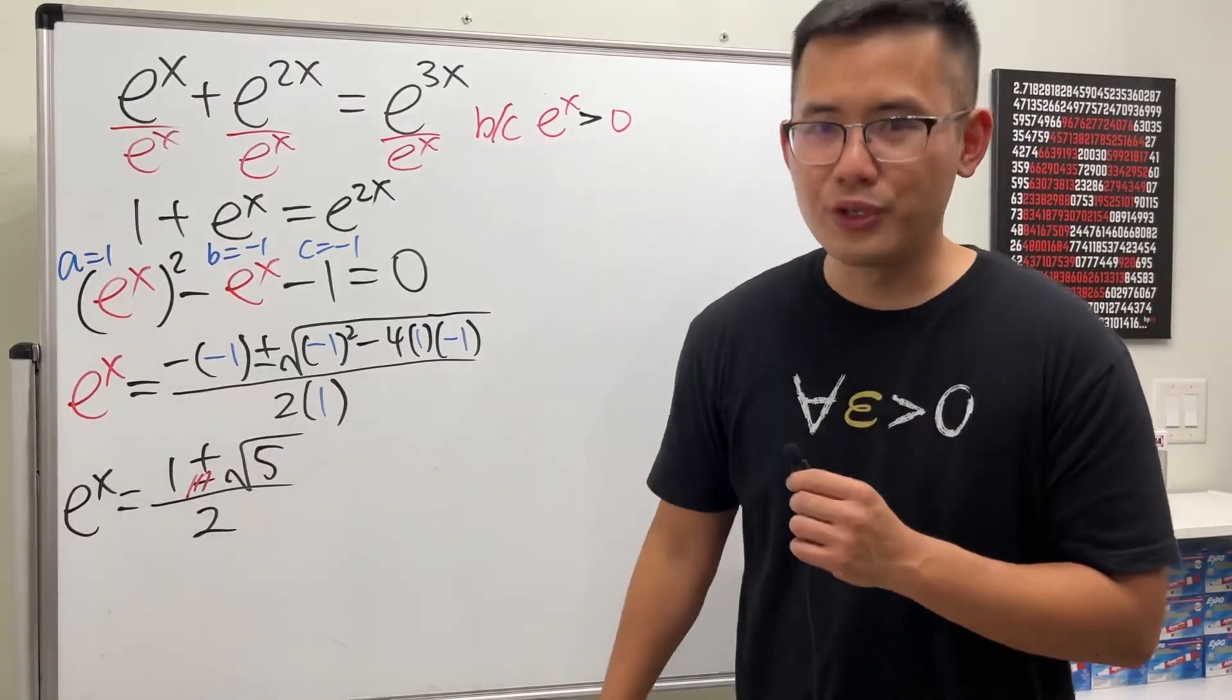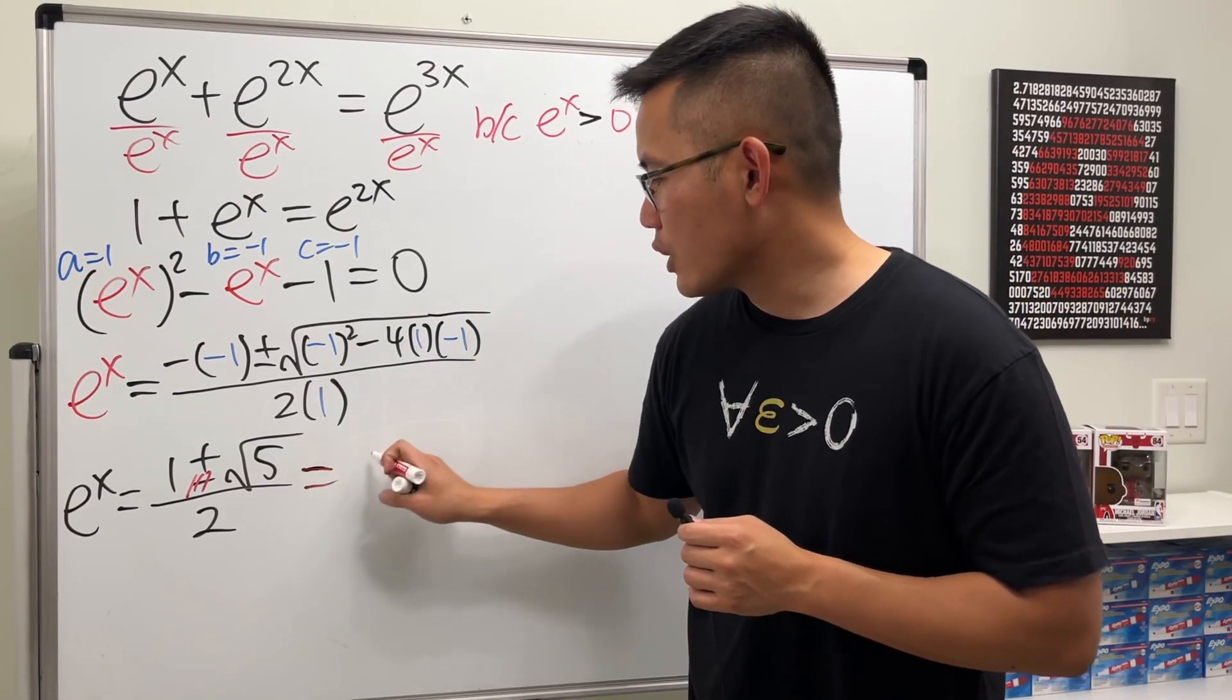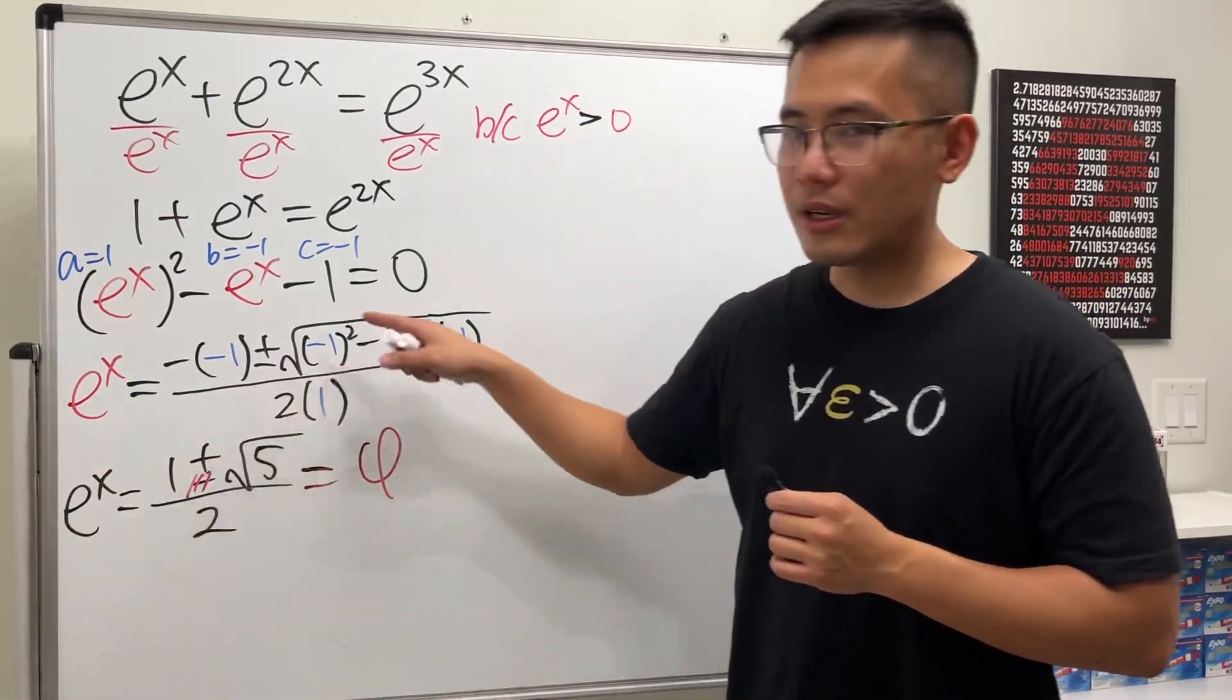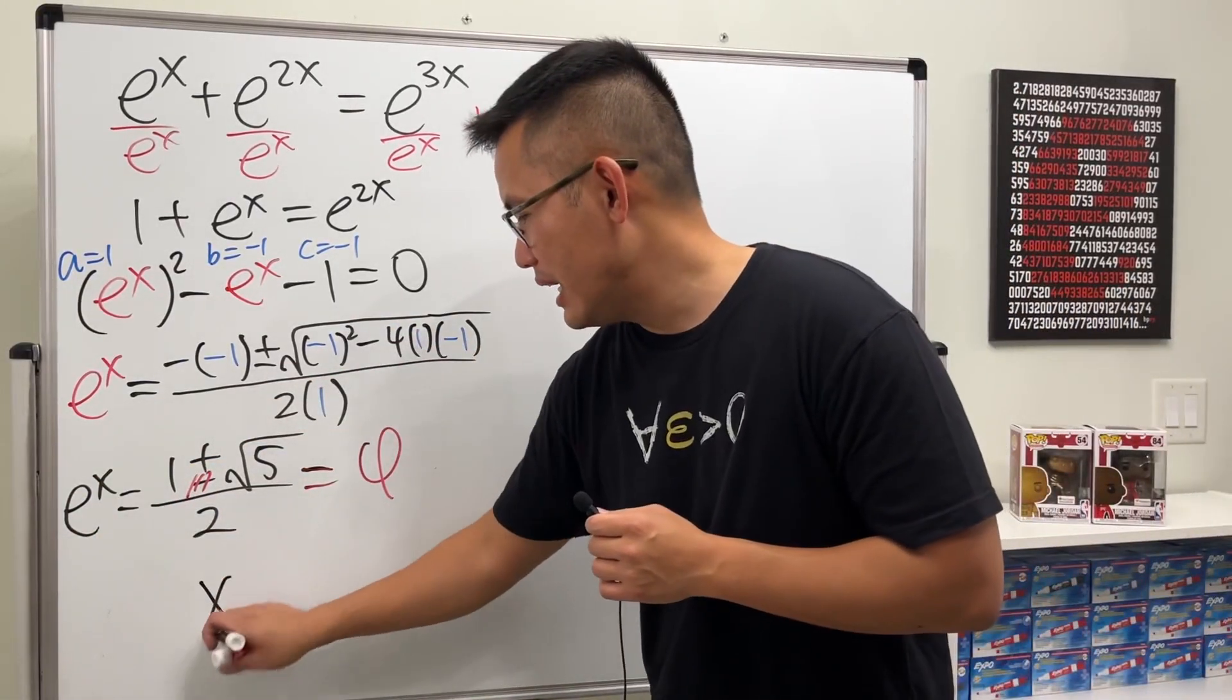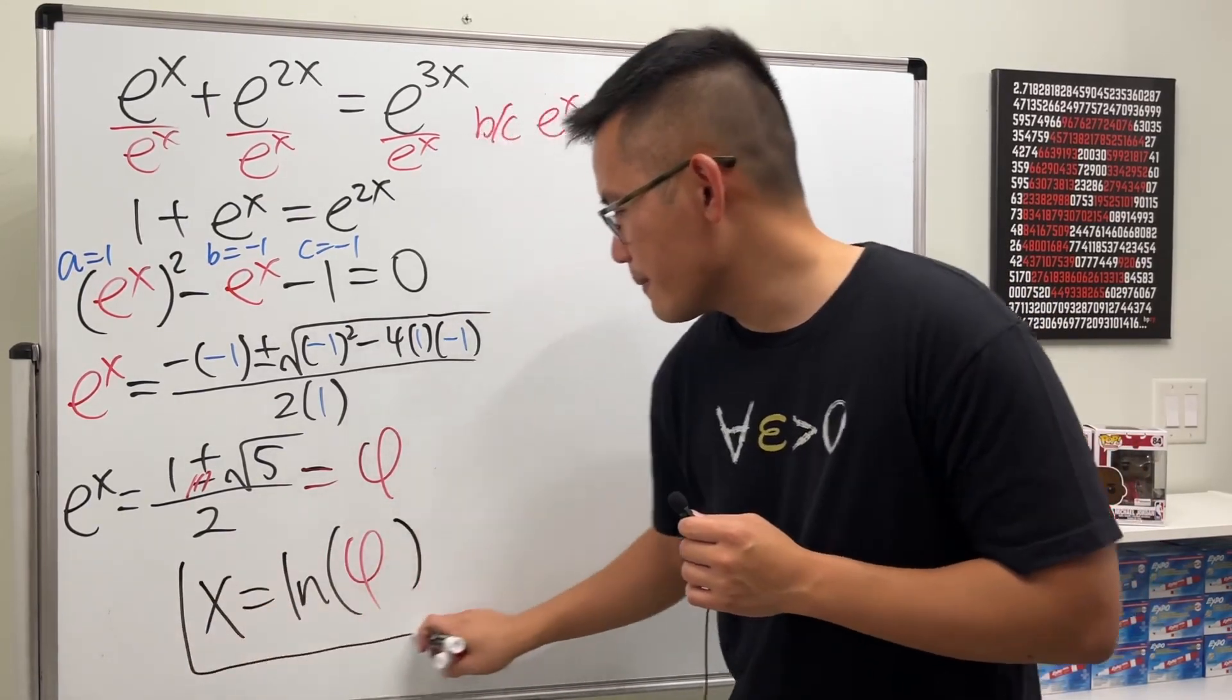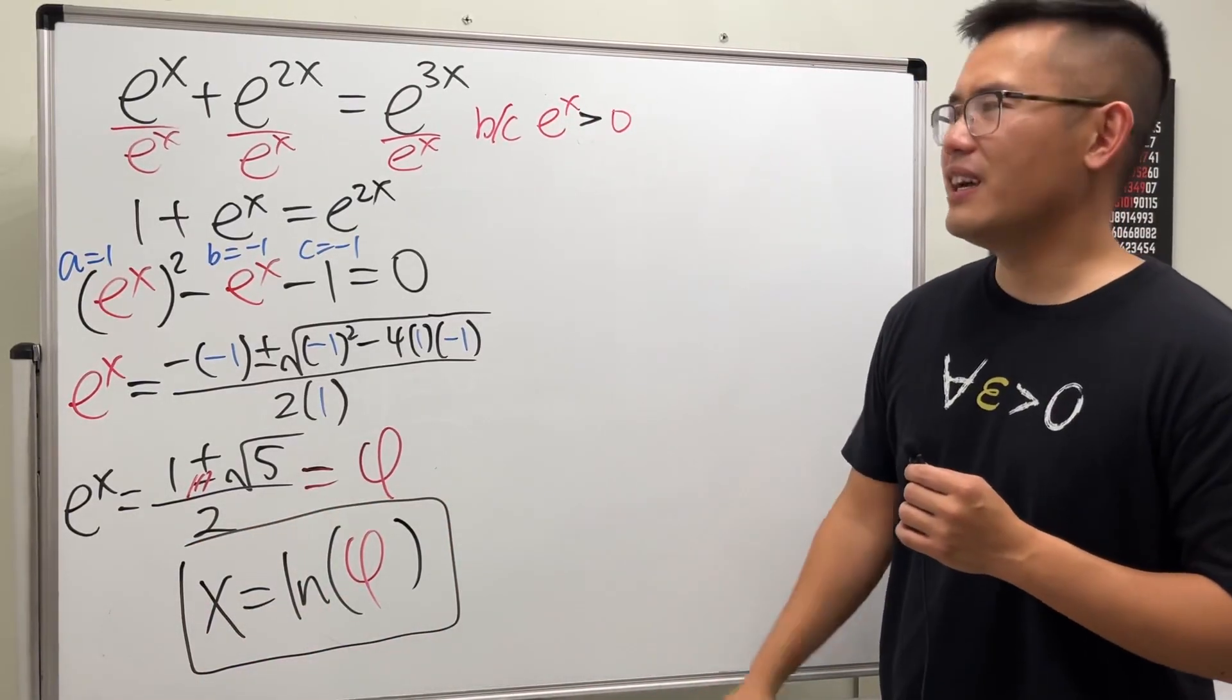because this right here is equal to the golden ratio. Finally, we can just take the natural log on both sides. Ladies and gentlemen, x is equal to ln of φ, the golden ratio. So, a golden exponential equation like this. Very nice.